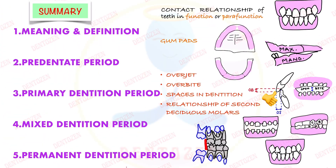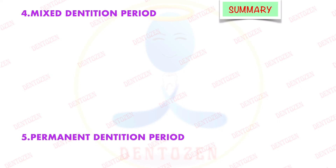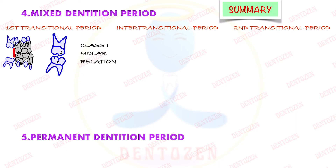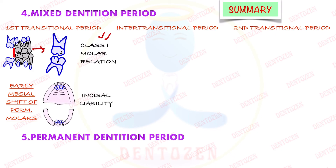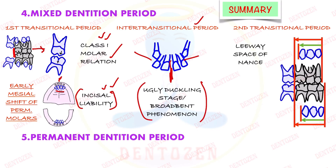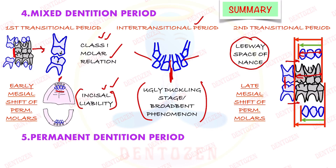In summary, the mixed dentition period is divided into three periods. In the early transitional period, two events occur: change from flush terminal plane to class 1 molar relationship by early mesial shift, and incisal liability — extra space required for permanent incisors replacing smaller primary incisors. In the inter-transitional period, erupting canines within the jaws lead to midline diastema, the ugly duckling stage. In the late transitional period, leeway space of Nance becomes available, allowing permanent first molars to move mesially into class 1 molar relationship — the late mesial shift of molars.